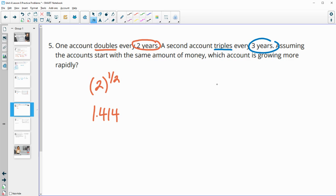Then this one triples. So the growth factor is three every three years. So we want it in one third of its tripling rate. And if you type this into your calculator, you get a decimal of 1.442. So this one is growing by 1.442 times each year versus 1.41. So this second account is growing faster.